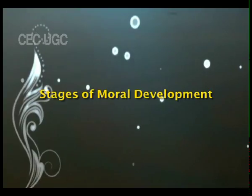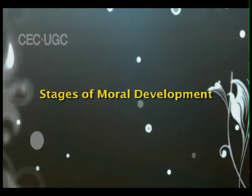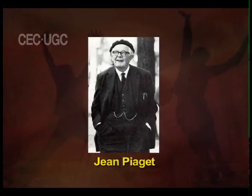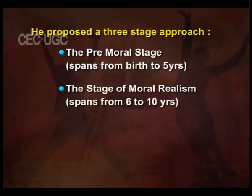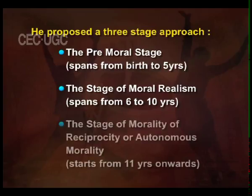Decisions affect everyone and can benefit or hurt everyone. Piaget has proposed a theory involving an invariant sequence of stages of moral development through which children progress as their cognitive capacities become increasingly sophisticated. He proposed a three-stage approach: the first being the premoral stage, spanning from birth to five years; secondly, the stage of moral realism, spanning from six to ten years; and thirdly, the stage of morality of reciprocity or autonomous morality, starting from 11 years onwards.